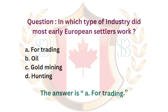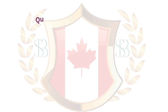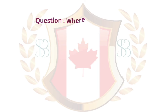Question. In which type of industry did most early European settlers work? a. Fur trading. b. Oil. c. Gold mining. d. Hunting. The answer is a. Fur trading.